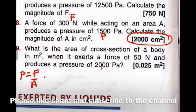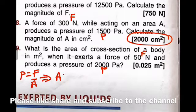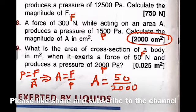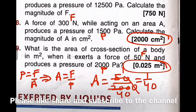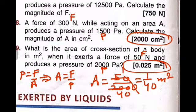The last question: what is the area of cross-section of a body? Force and pressure are given. Using the same formula, area equals force divided by pressure. Area = 50 ÷ 2000 = 1/40, which in decimal is 0.025. If you divide 1 by 40 you get the same result. So the answer is 0.025 meter square.